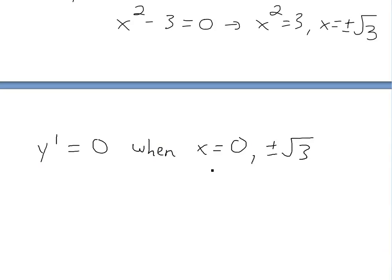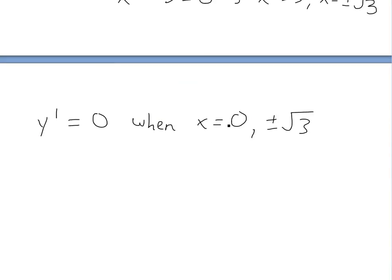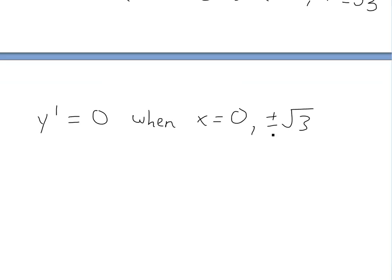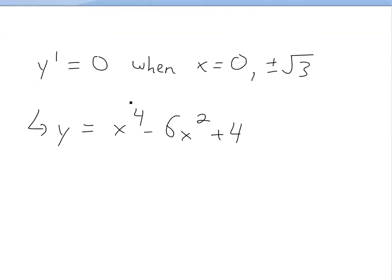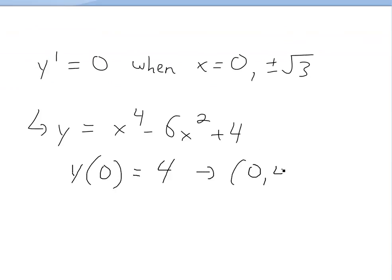To find the actual points on the curve, we plug these x values into y equals x to the 4 minus 6x squared plus 4. For x equals 0: the first two terms go to 0, leaving y equals 4. So the first point is (0, 4).